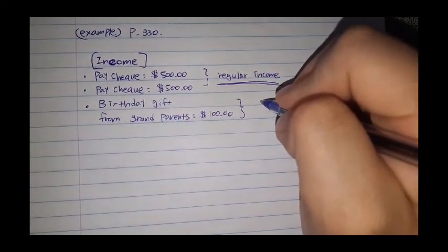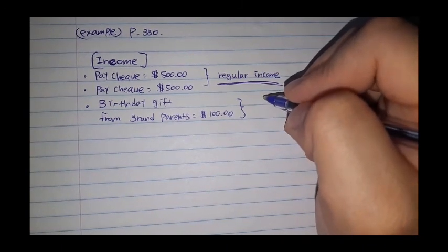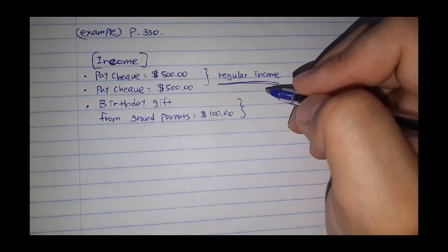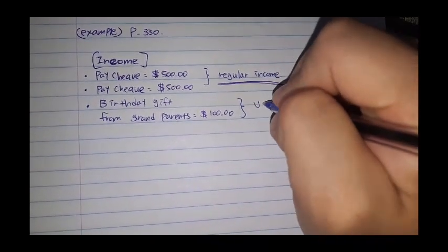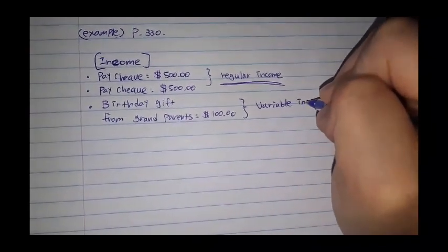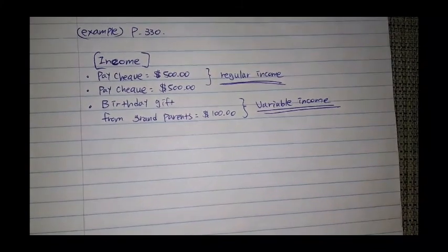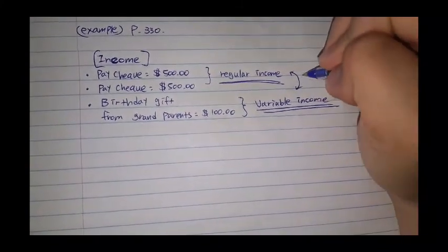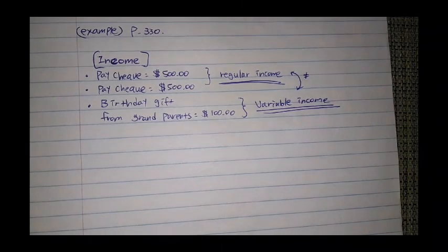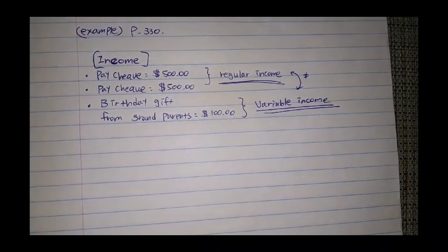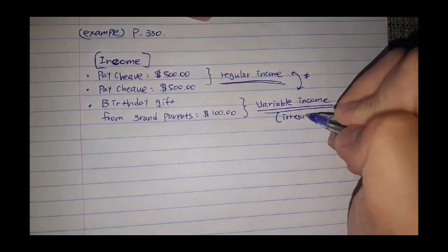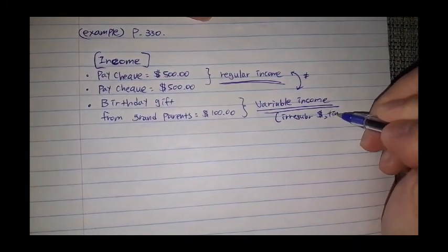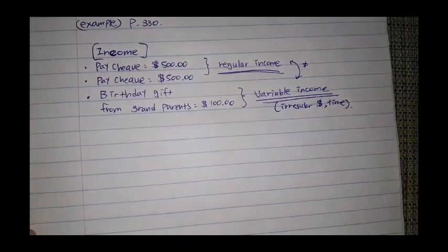Birthday gift. This is not a regular. Once in a year, not once in a lifetime. That's pretty sad. Once in a year. So $100, this is more variable income. Why? It's because it's not regular. These two are not equal together in terms of its definition. You can predict when or how much you receive. So I'm going to put it as variable income, just because it's irregular. Not only amount, but also time too.